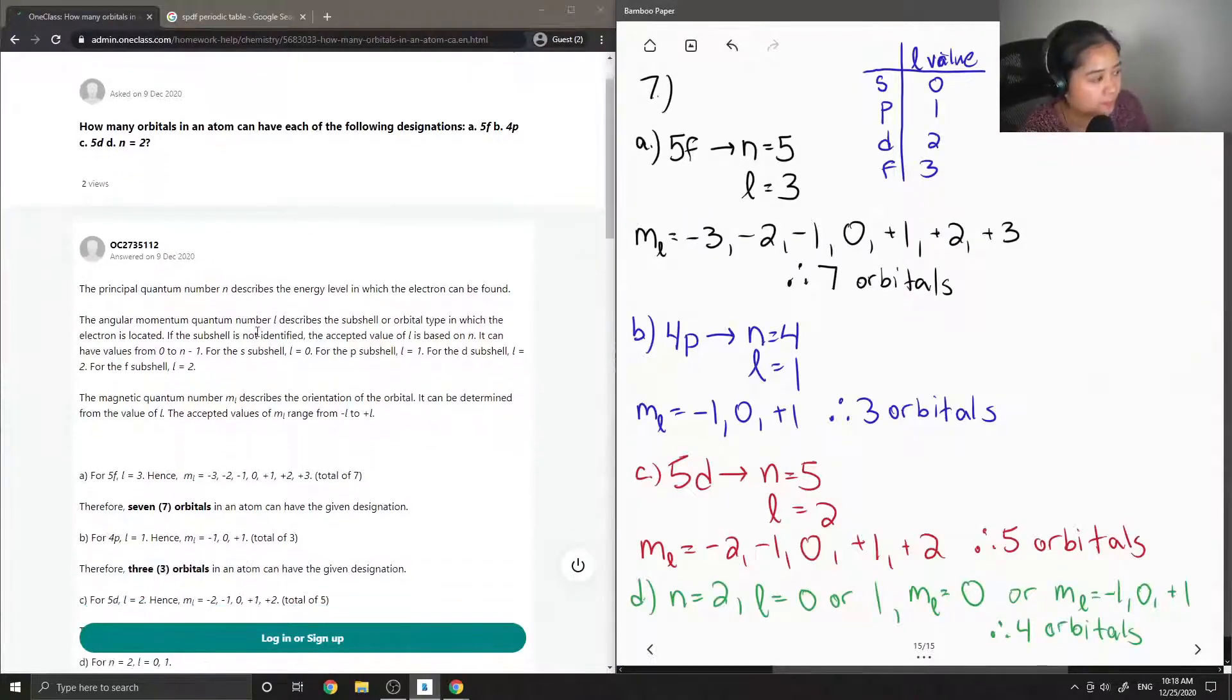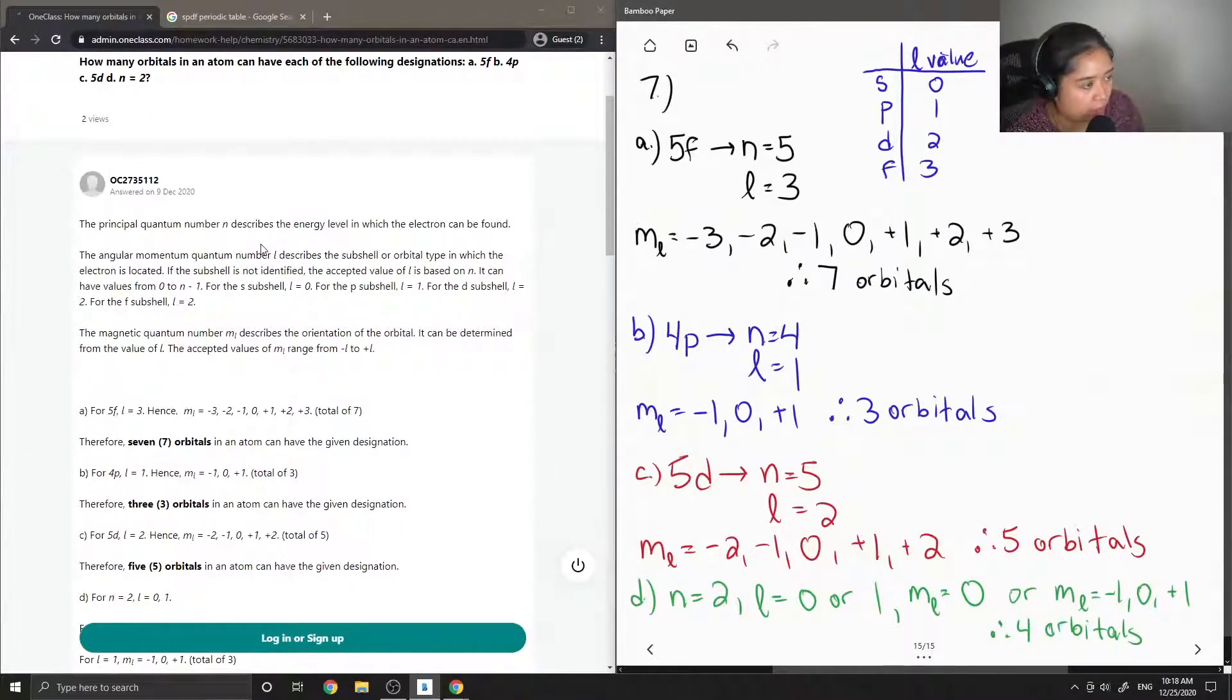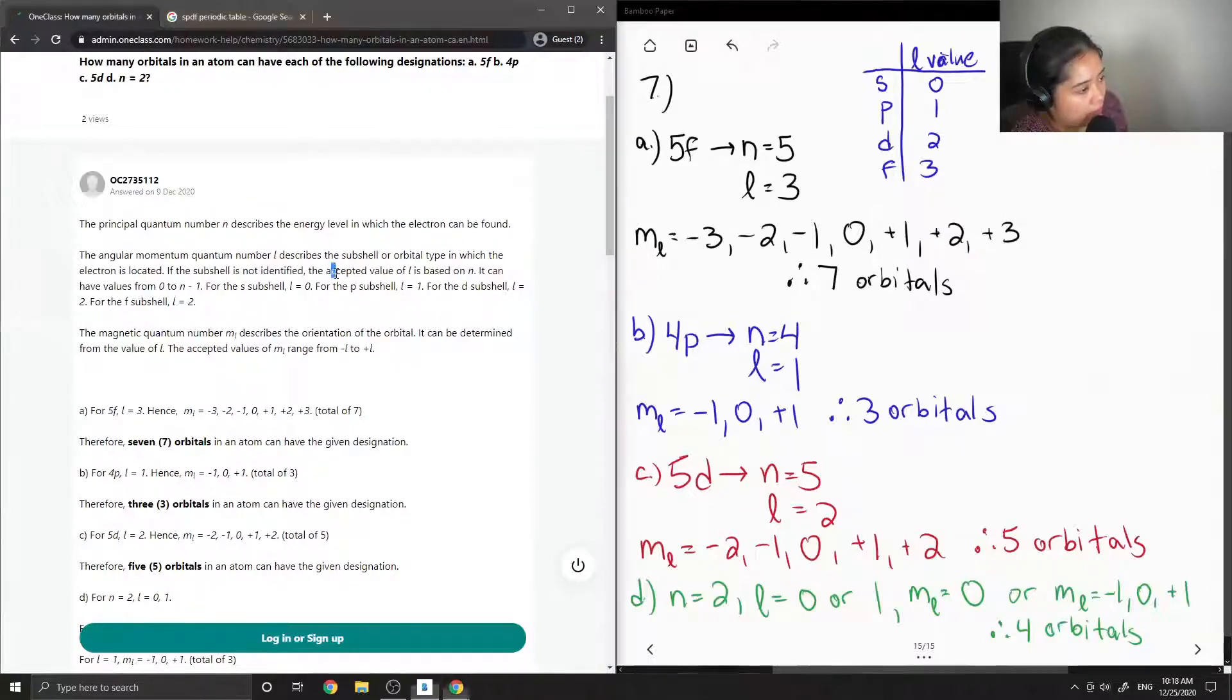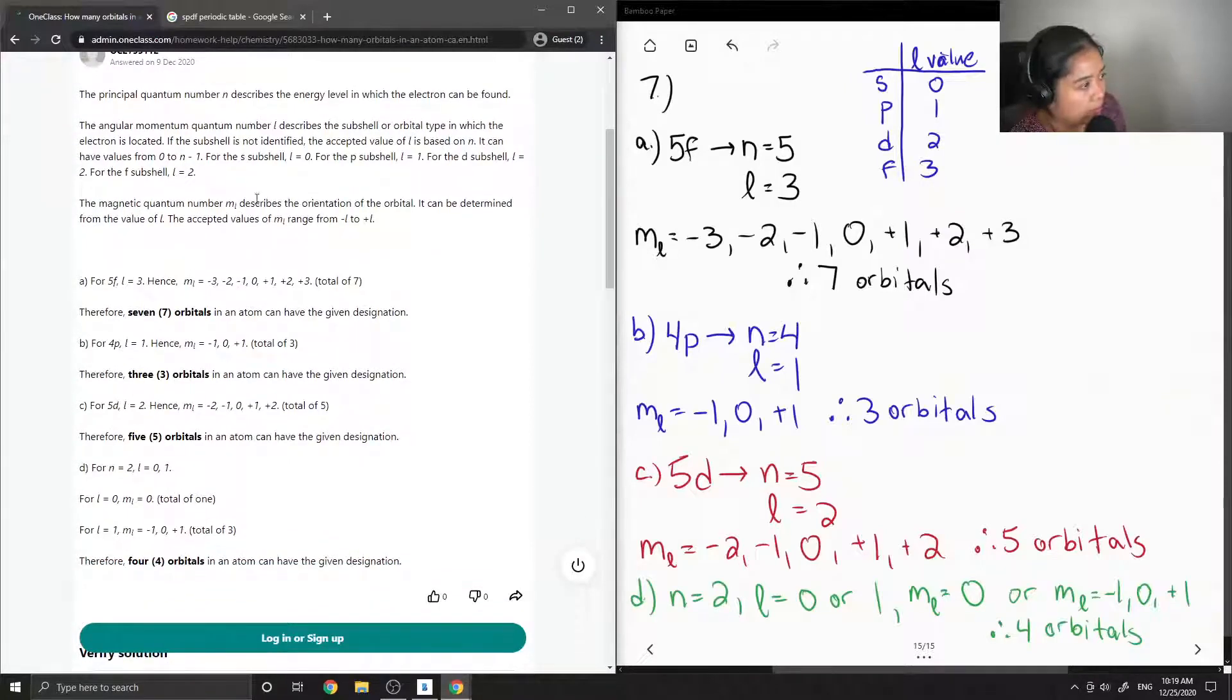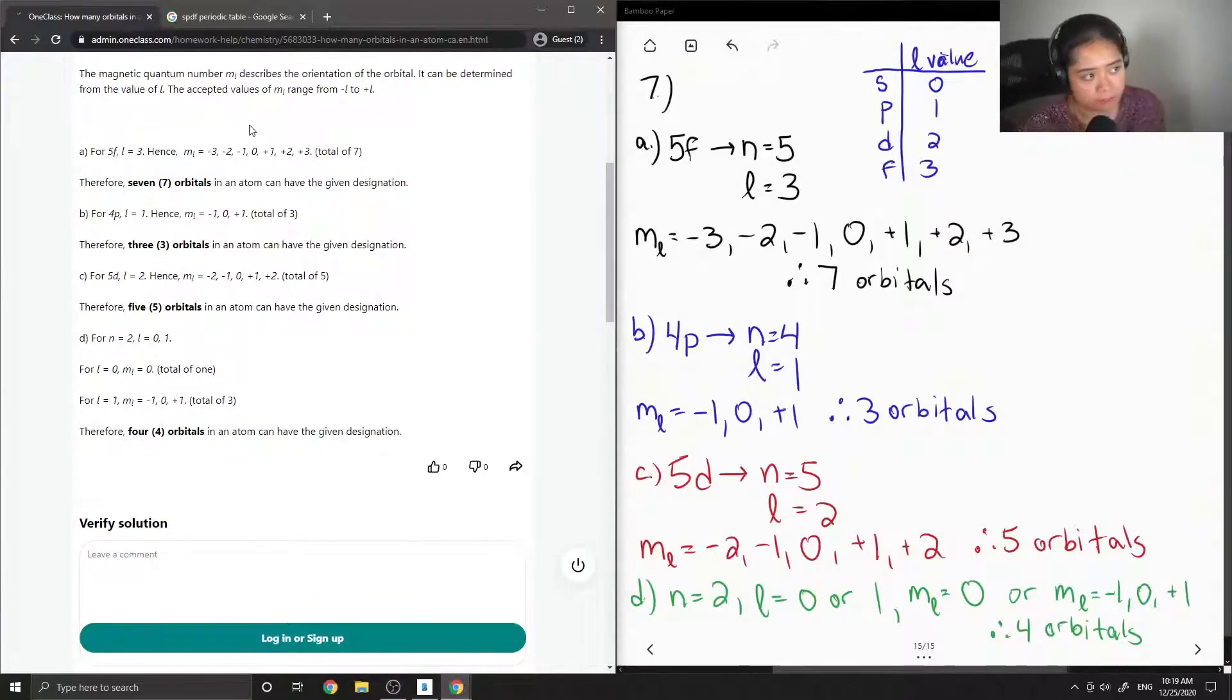Okay, so let's see what the junior tutor said. The principal quantum number n describes the energy level in which the electron can be found. The angular momentum quantum number l describes the subshell or orbital type in which the electron is located. If the shell of the subshell is not identified, the accepted value of l is based on n. It can have values ranging from zero to n minus one. For the s subshell, l equals zero. For the p subshell, l equals one. For the d, l equals two. And for the f, l equals three. I'll fix that typo in a bit. So the magnetic quantum number ml describes the orientation of the orbital. It can be determined from the value of l. The accepted values of ml ranges from negative l to positive l.